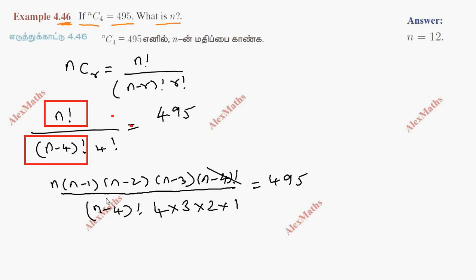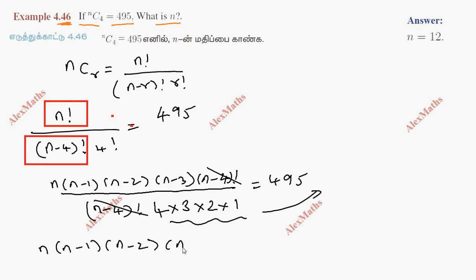So n minus 4 factorial cancels. After cancelling, we get n into n minus 1 into n minus 2 into n minus 3 equal to 495 into 4 into 3 into 2 into 1.